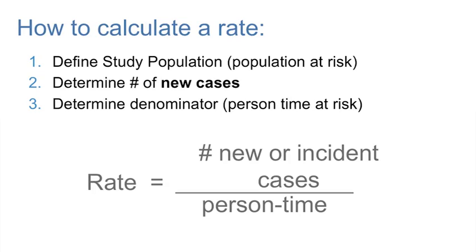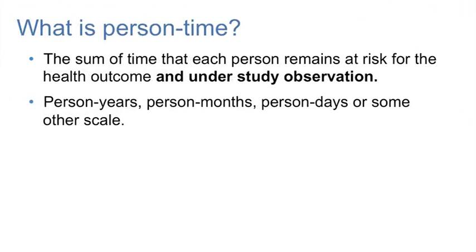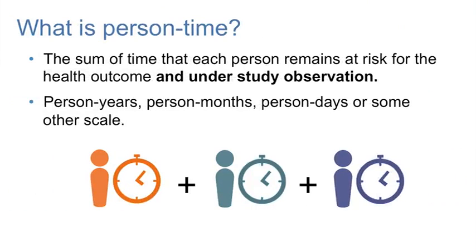Now let's discuss person time in more detail. In order to understand how to calculate a rate, you will need to understand the concept of person time. Person time is the sum of time that each person remains at risk for the disease or health outcome and under study observation.